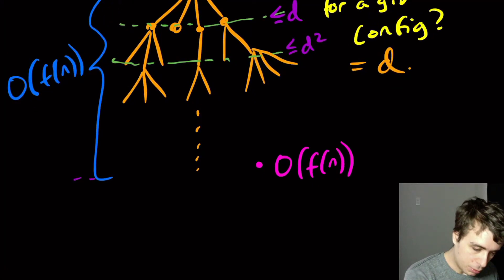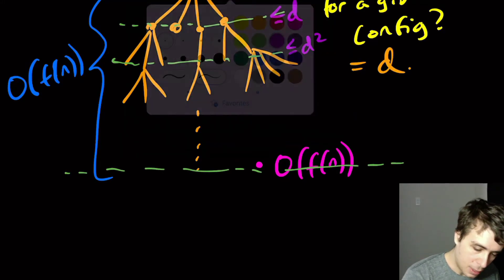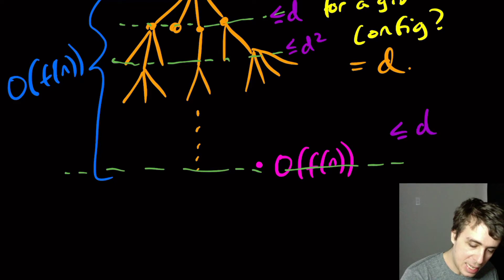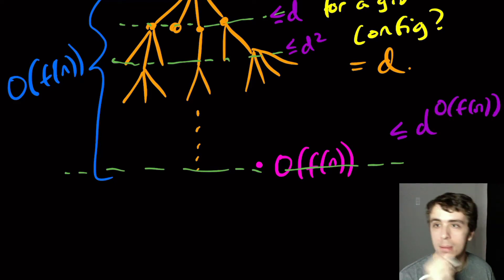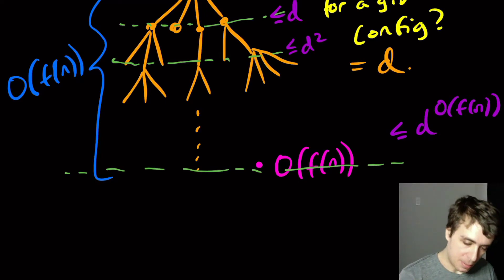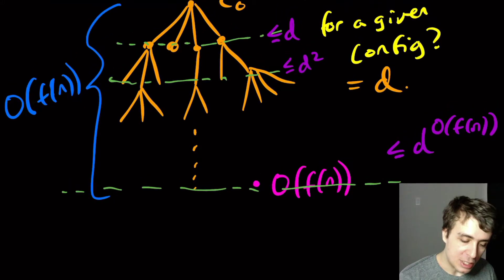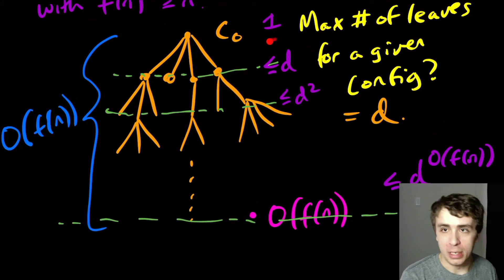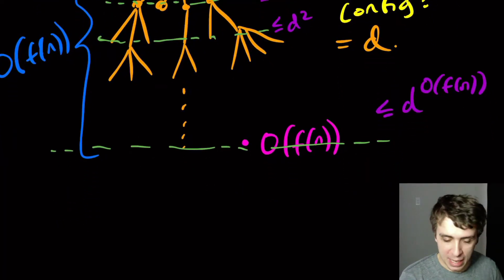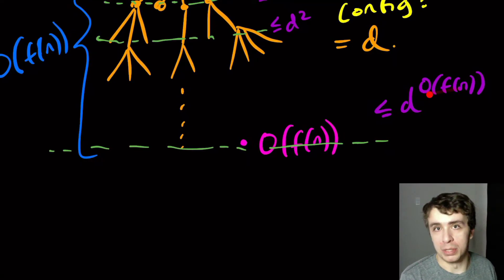And so if we come down here, once we get down to, let's go back to green. So down at this level, we have at most D to the big O of f(n). Because in here, it really is whatever this number is minus one, because we started at one, not D. But again, the constant upstairs will save us here.